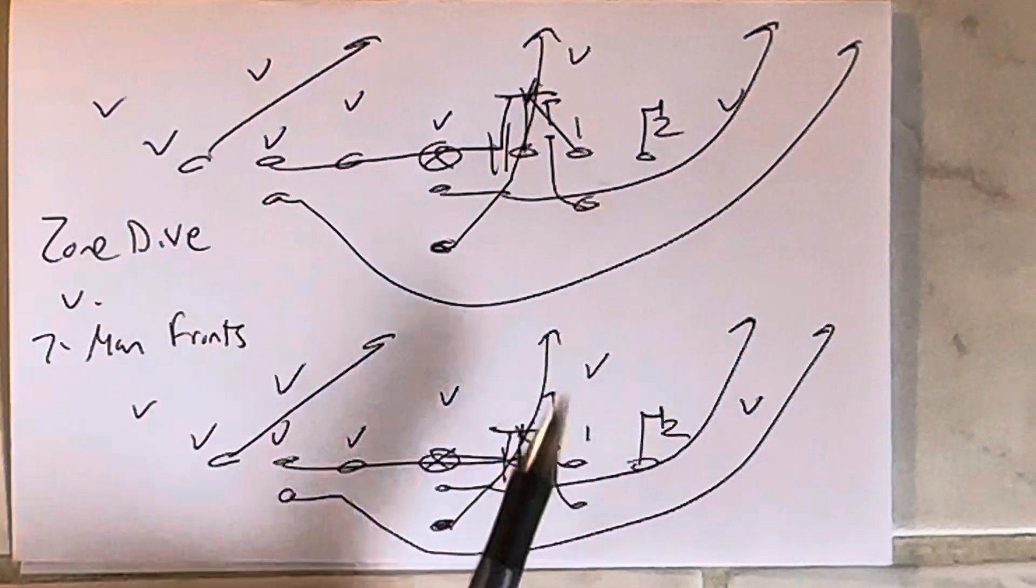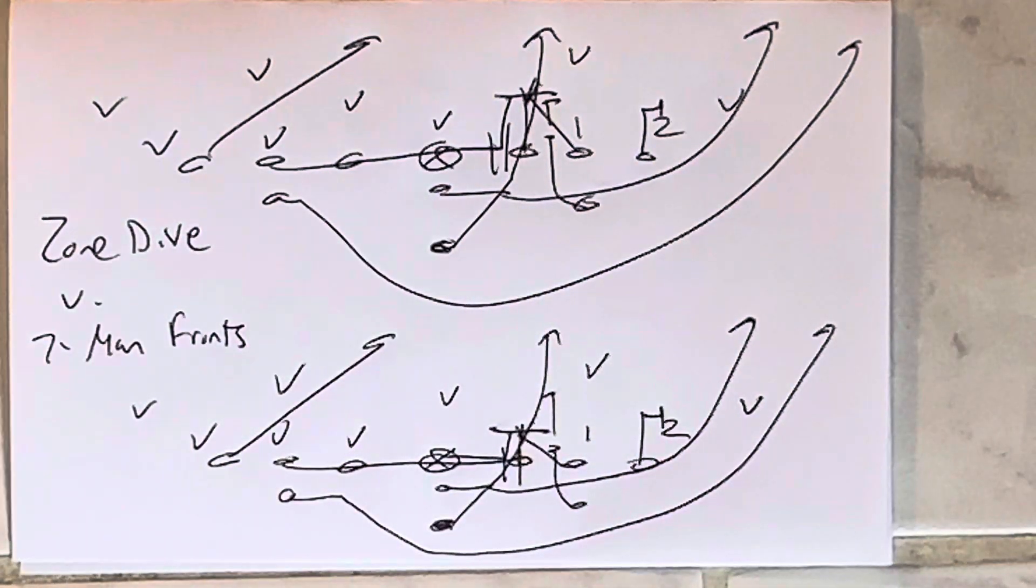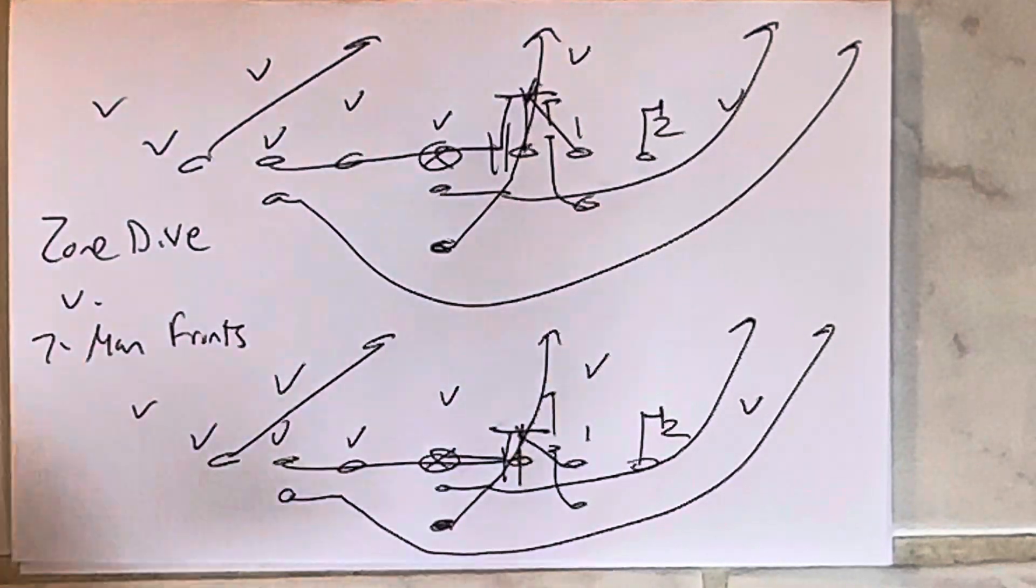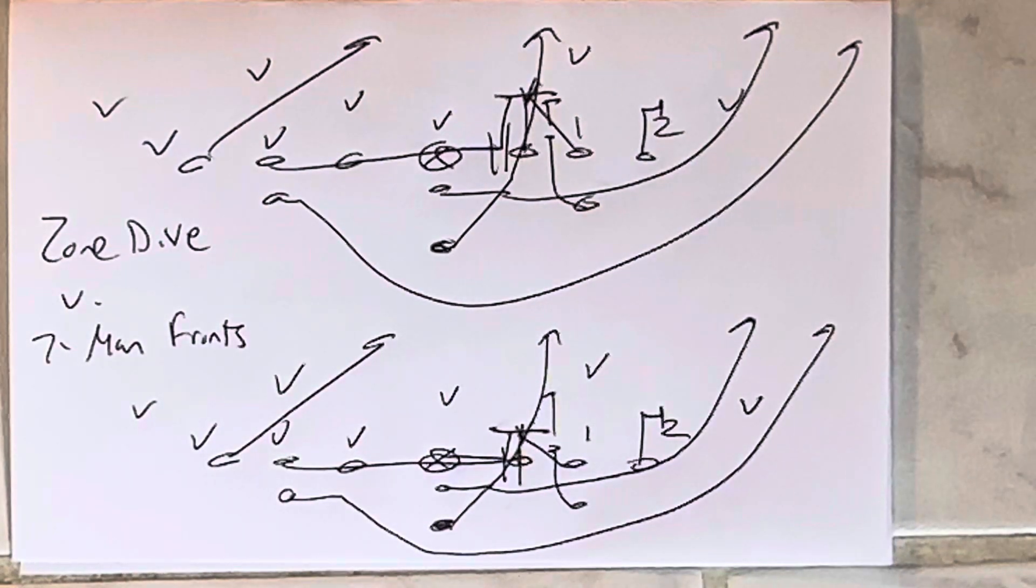You're running the ball right behind the triple team. They've got seven people in the box, they've got two corners out there to be the run support players. Any time they run a split safety defense, the corners are the run support player. These two guys are playing the verticals.